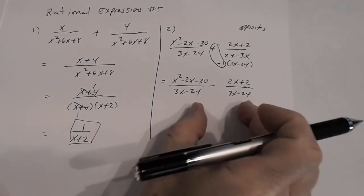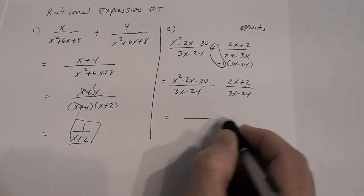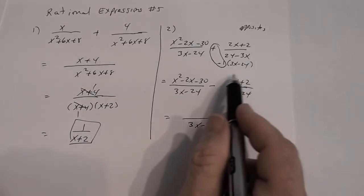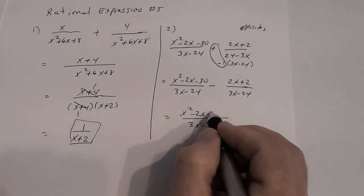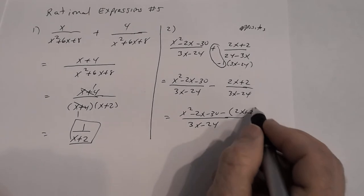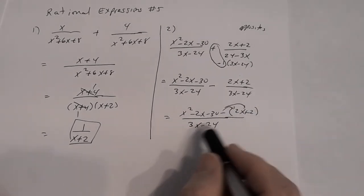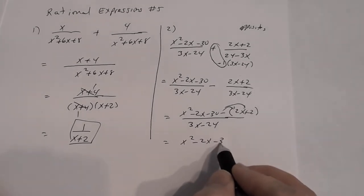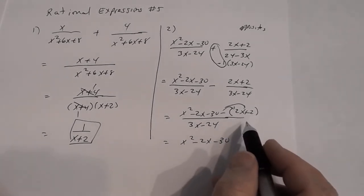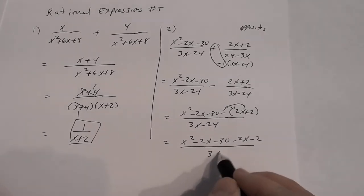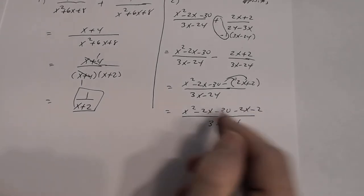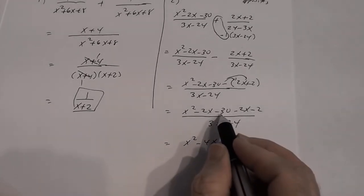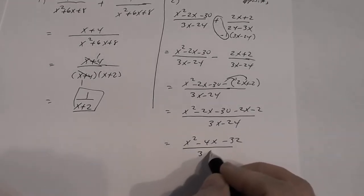I'm going to write this as one rational expression. Be careful because this is subtraction — when you're subtracting a polynomial with more than one term, you need to put it in parentheses. So we get x squared minus 2x minus 30 minus, in parentheses, 2x plus 2. Getting rid of the parentheses using the distributive property: x squared minus 2x minus 30, minus 2x minus 2. Combining like terms: x squared, negative 4x, negative 32, divided by 3x minus 24.